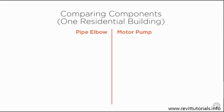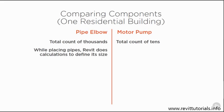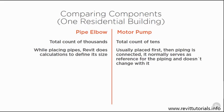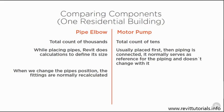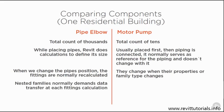A pipe elbow belongs to the pipe fitting category, while a motor pump belongs to mechanical equipment. Because of the amount of repetitions, the pipe elbow family file should be kept as small as possible, while the motor pump can be bigger and more detailed, since the number of repetitions is much smaller than the fittings.